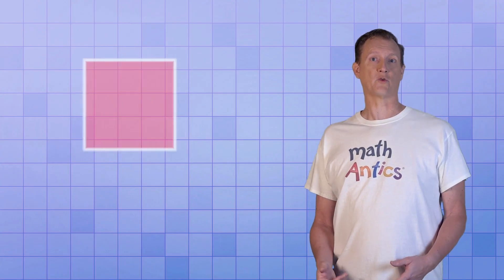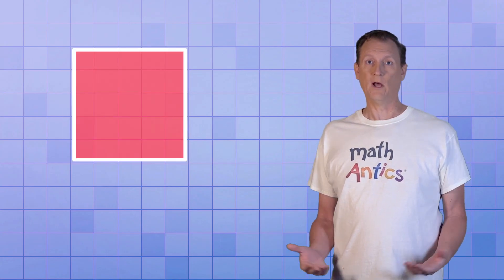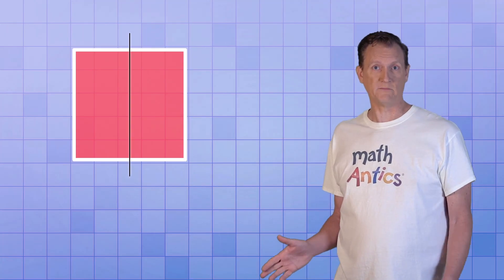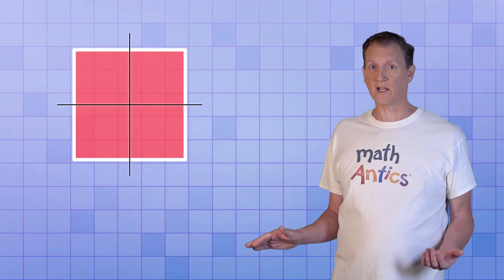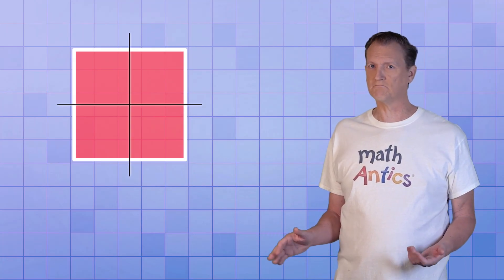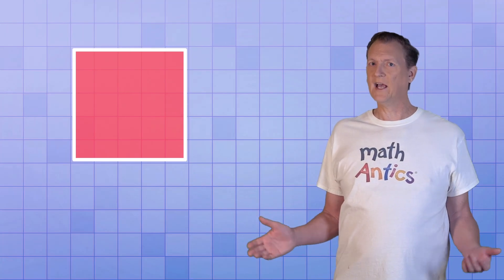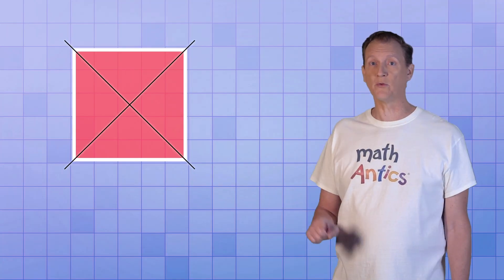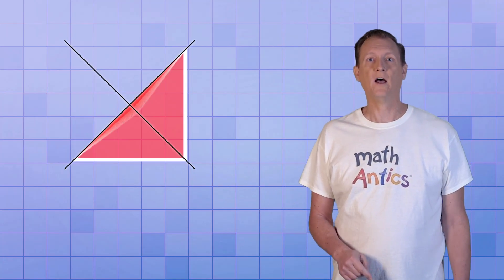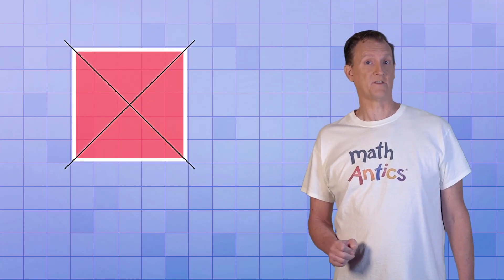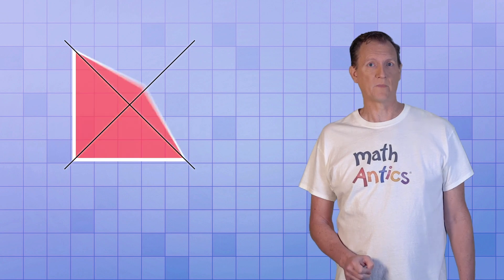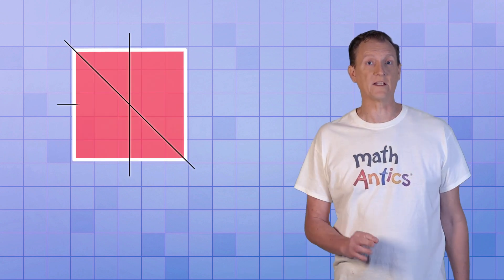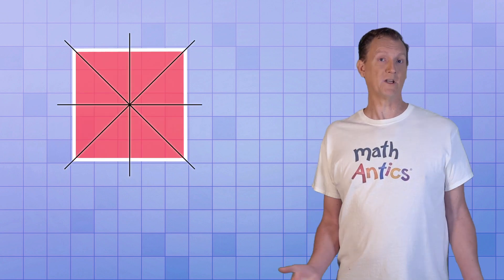Now let's check out a square. It has a vertical line of symmetry and a horizontal line of symmetry. But what about these lines that go through the corners? Those are lines of symmetry too. So a square has four lines of symmetry.